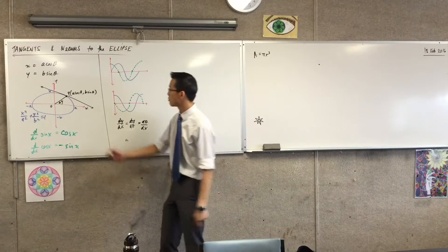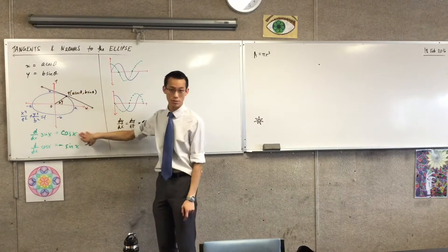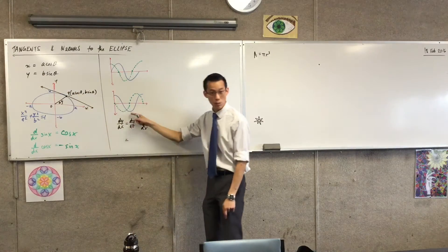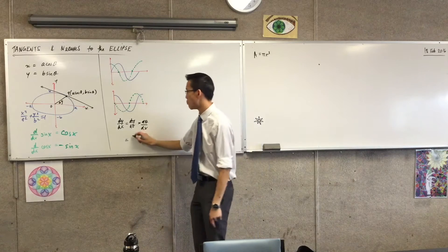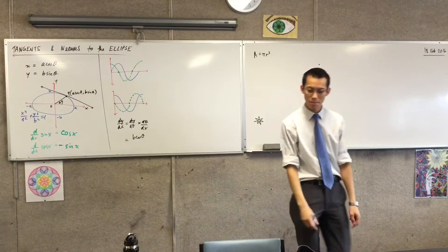dy/dθ, that was the easier one, right? We just established that when you differentiate sine, he turns into cosine. And then there's the b hanging out the front. So the simple derivative of dy/dθ is just b cos θ.